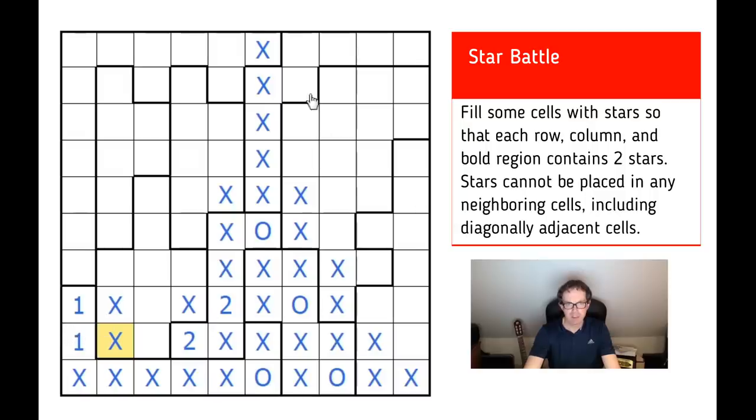So, now what I see is this shape here still needs to have one more star in it, and that star's going to have to go in one of these positions. So, that means there must be x's in those 2 positions. And now we can still do some work on this shape. We started to do it when we hypothesized about the star here, but look. I need to put 2 stars into these 5 cells.